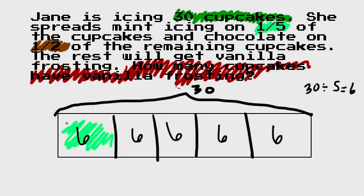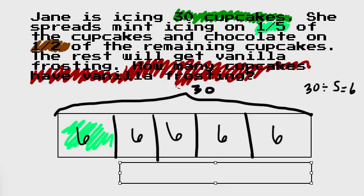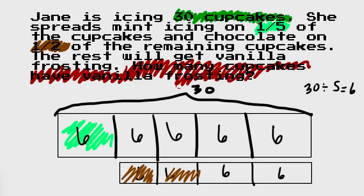If six of them got mint, we now have four boxes remaining — 6 × 4 = 24 left. What we can do to show that is draw another tape diagram right below it with just those four remaining boxes. It's going to be a smaller one, representative of what we have left. The reason I do this is because it's a little easier to see the half — half of the remaining cupcakes are going to be chocolate.